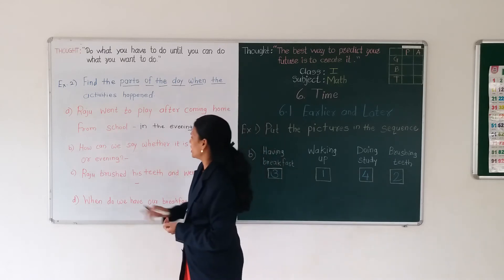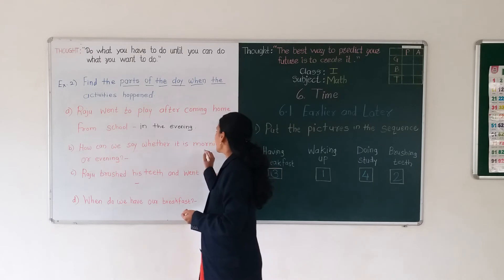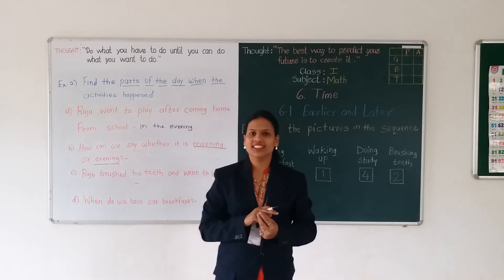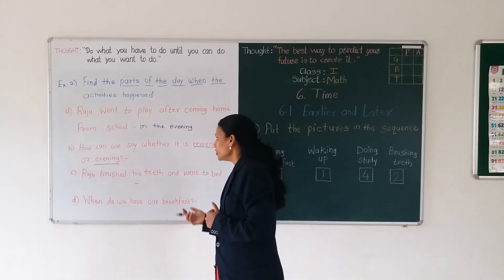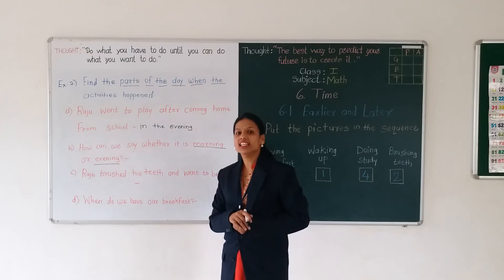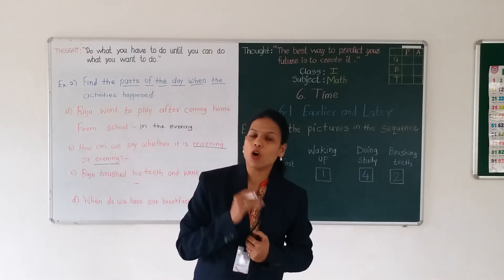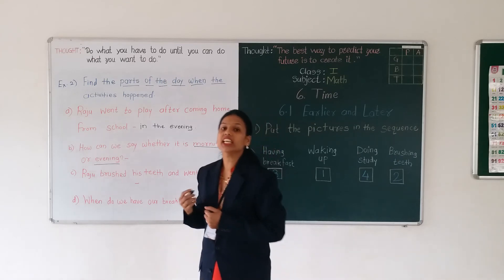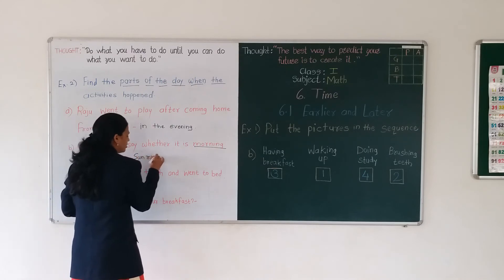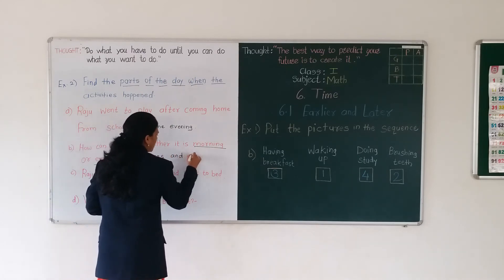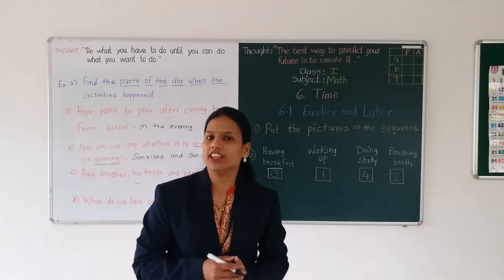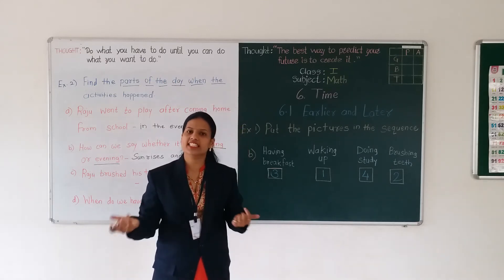How can we say whether it is morning or evening? How do we know? When the sun rises, that time it is morning. And when the sun sets, that time it is evening. So the answer depends on sun rise and sun set. When the sun sets, we can say it is evening time. And when the sun rises, we can say it is morning time.